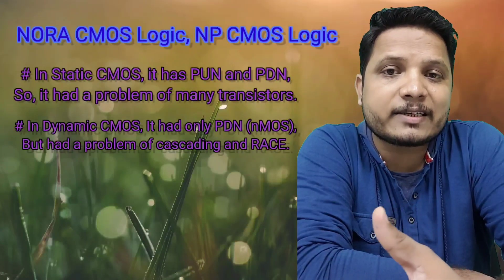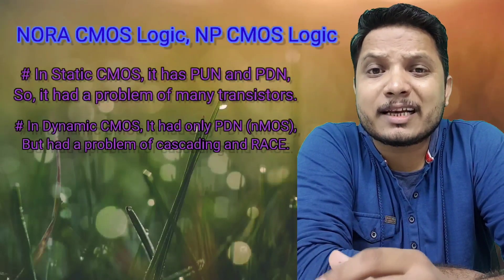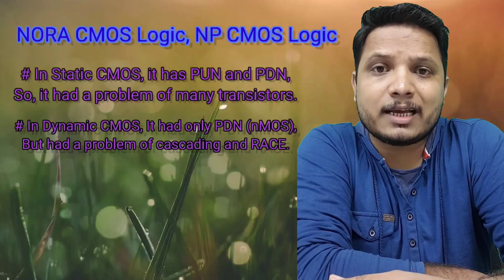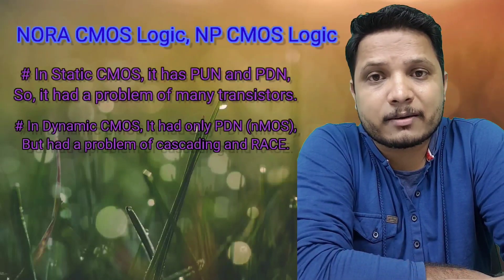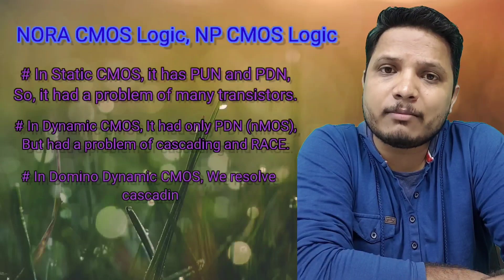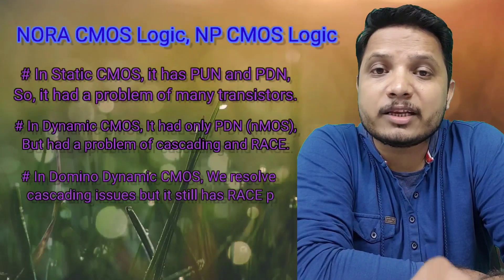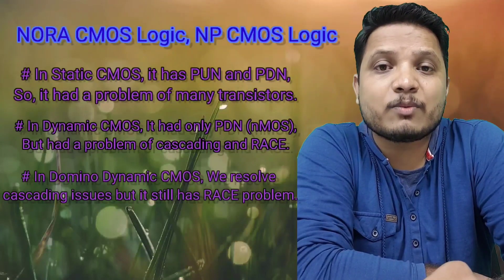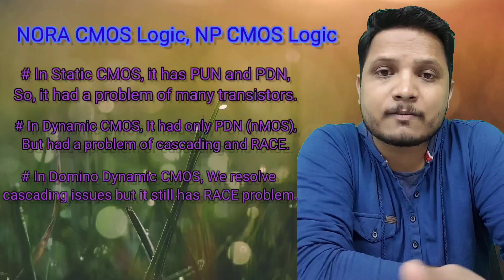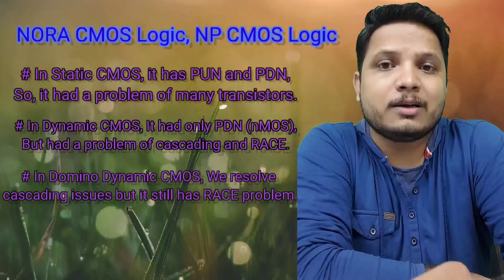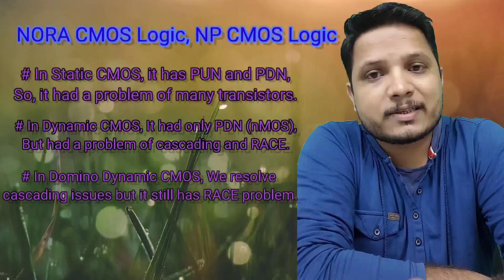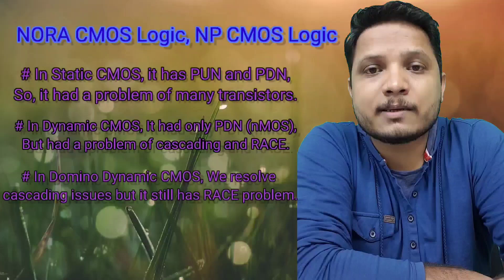If you observe any integrated circuit, there are many circuits connected in cascade. So if you use dynamic circuit with CMOS, then cascading issues will have a larger impact. To avoid that issue, we studied domino CMOS logic. But in domino CMOS logic, there was a problem regarding delay at the output with respect to clock — one can say clock skew. I'll explain clock skew in detail in further videos. But because of the issues of delay and clock skew, there was a race condition with domino CMOS as well.